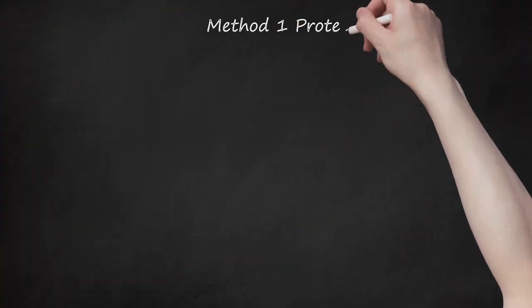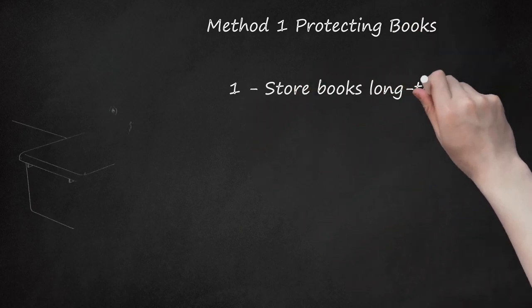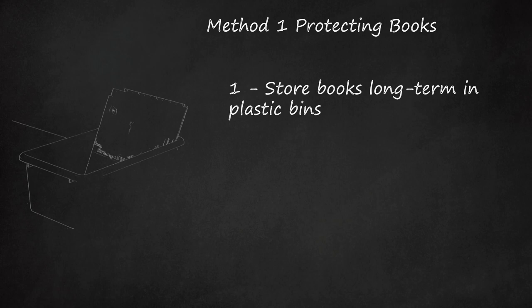Method 1: Protecting Books. Store books long-term in plastic bins. If you've got more books than you know what to do with, the best place to store them is in opaque plastic tubs that you can seal and store in a cool location. Plastic tubs help to protect books from sunlight, rodents, and other conditions, and are easy to stack in out of the way locations.